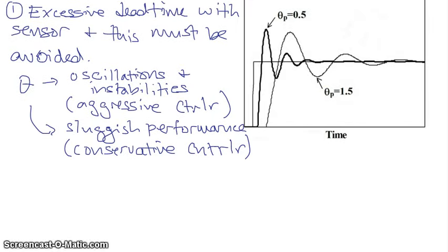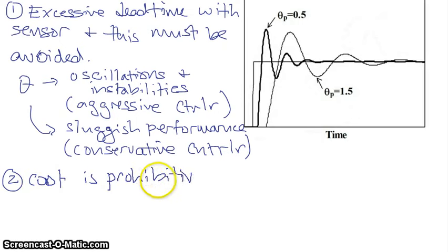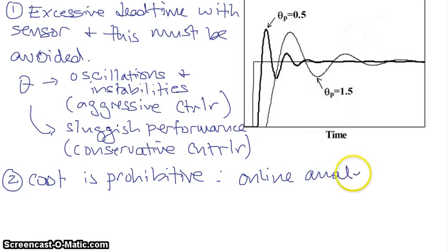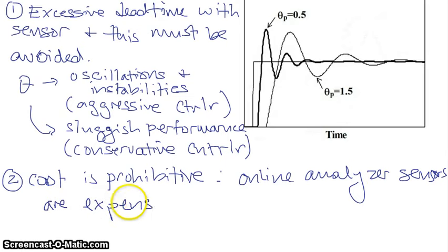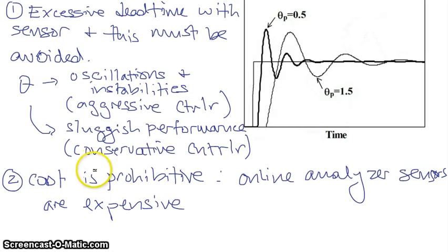Another reason to use inferential control is that your cost is prohibitive — your analyzer sensor may be very expensive. Online analyzer sensors are expensive, so this would be a reason why you would use inferential control. Both of these scenarios — excessive dead time and high cost — apply to analyzer sensors, because analyzer sensors can have excessive dead time and can be expensive. So in the case where your ultimate controlled variable is a composition, it is often advisable to use inferential control for these two reasons.